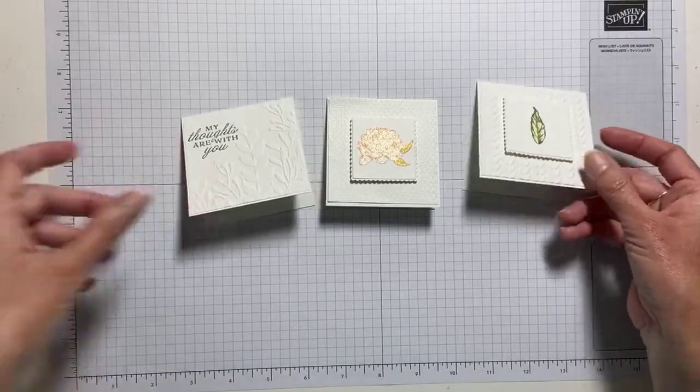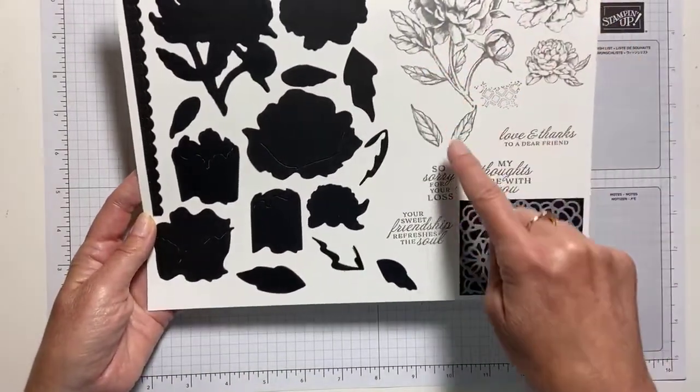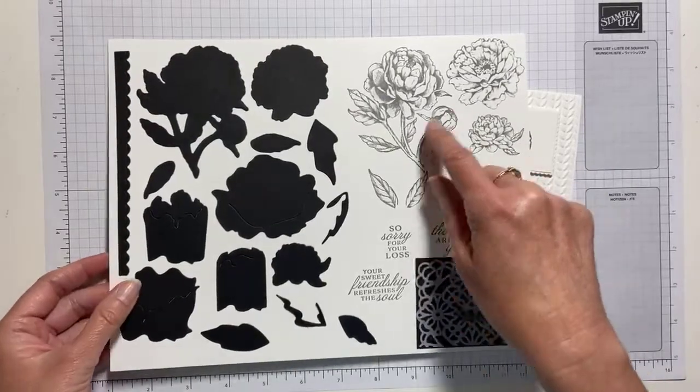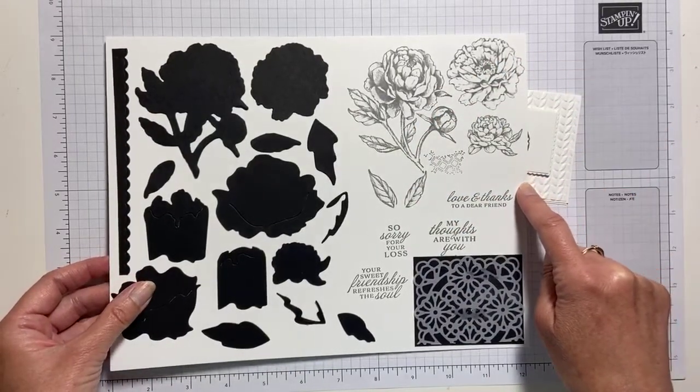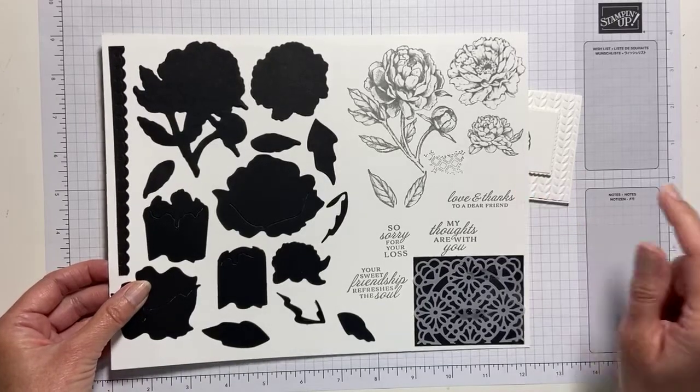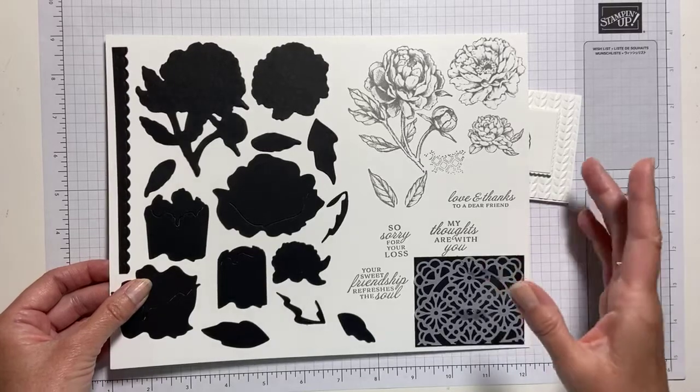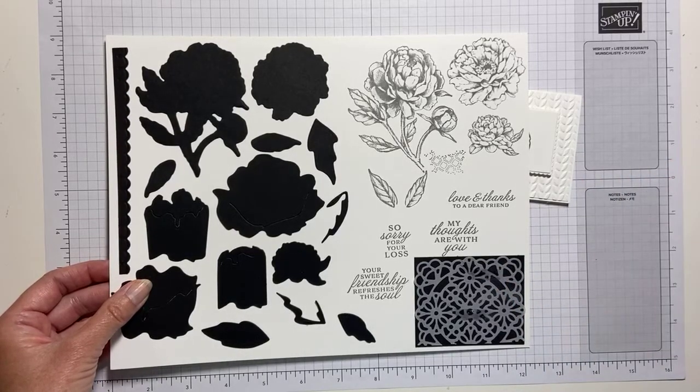Before we do, let me show you what comes in this. First of all, here are all the stamps that come, and we've got these really large peony blossoms, and they're just gorgeous. I mean, so pretty. You saw me color them on Saturday with Magenta Madness, and today we're going a little softer. We're going to kind of follow the color palette that's in the Designer Series paper.